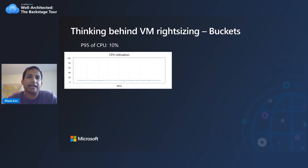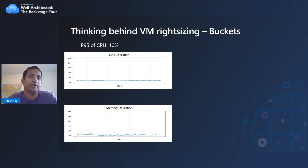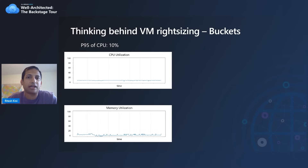Let's say in this case the 95th percentile of CPU is 10%. For memory, we take the 100th percentile — simply the max value observed over the last seven days. There's a difference in the percentiles we consider for CPU and memory because most workloads can handle CPU peaking out. But if memory peaks out, there is a risk that workloads can crash due to out-of-memory exceptions. Performance and reliability is the number one thing we think about while generating recommendations — we want to make sure those aren't impacted at all.